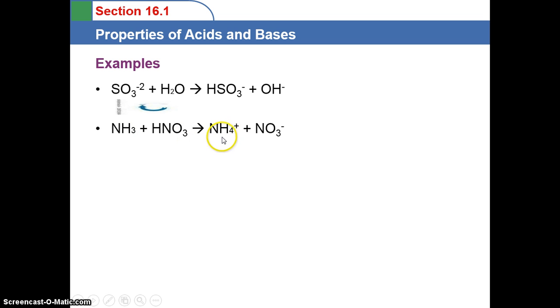So we take a look at the products. We see that NH4 has a plus 1 charge, so it gained a proton. NH3 became NH4+. So it was the proton acceptor making it the base, and this is its conjugate acid. HNO3 gave up a hydrogen, so it was the proton donor, so it makes this the acid, and NO3- is its conjugate base.